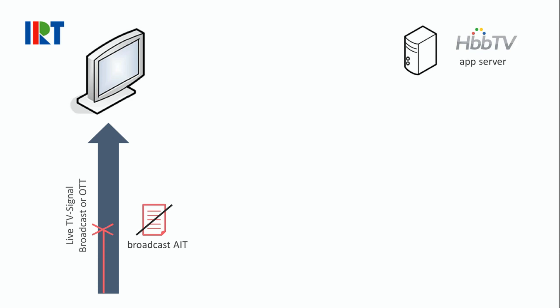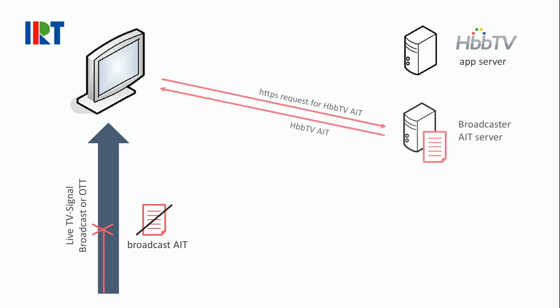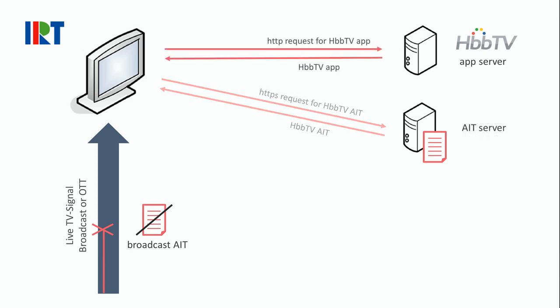The basic idea is that all relevant AIT information is hosted as a file on a web server. The HbbTV receiver can then retrieve that AIT file and, based on this AIT, launch the HbbTV application.